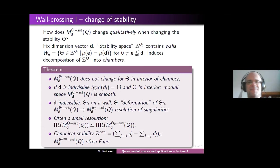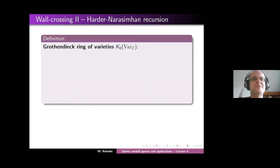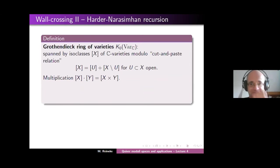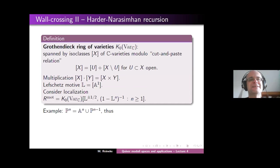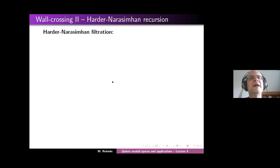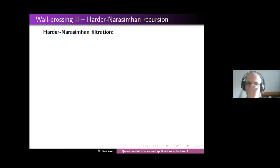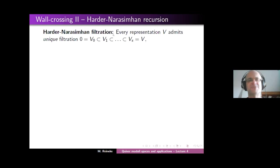Okay, I think that was it for the question session. So we can continue whenever you're ready. Let me continue. We looked at this gadget called the Grothendieck ring of varieties, and that's the place where some invariants of our varieties — of our moduli spaces — live, and now we want to compute them.